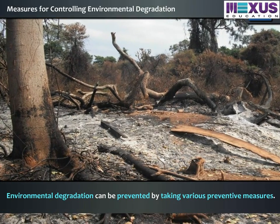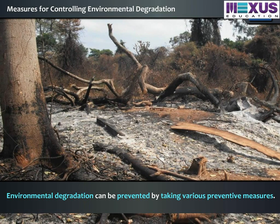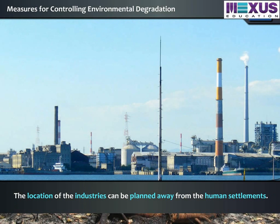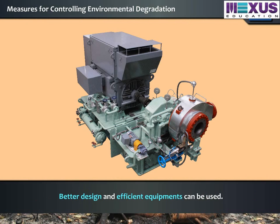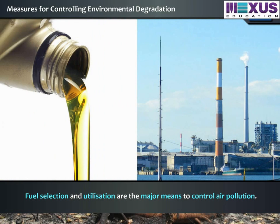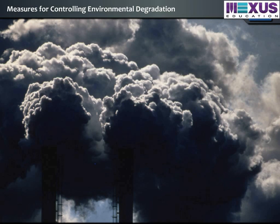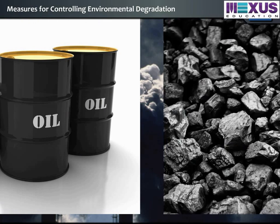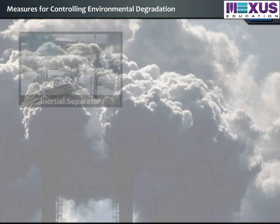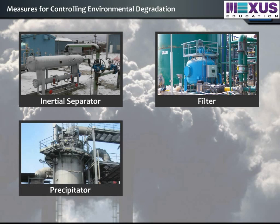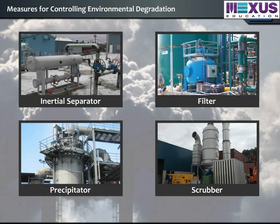Environmental degradation can be prevented by taking various preventive measures. The location of industries can be planned away from human settlements. Better design and efficient equipment can be used. Fuel selection and utilization are the major means to control air pollution. For example, smoke can be prevented by using oil in place of coal in industries. Inertial separators, filters, precipitators, and scrubbers are a few equipment which can be used to control air pollution.